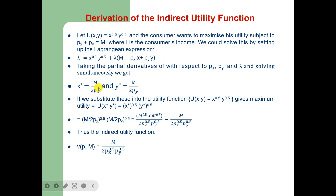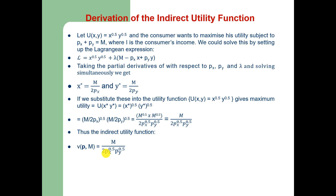Now, if we substitute these two Marshallian demand functions back into the utility function, it gives us the maximum utility. Solving this, the utility function becomes (M / 2PX)^0.5 * (M / 2PY)^0.5. Thus the indirect utility function is derived as V(PX, PY, M) = (M / 2PX)^0.5 * (M / 2PY)^0.5. This is how we derive the indirect utility function from the utility function subject to the budget constraint: derive the Marshallian demand functions, substitute them back into the utility function, and solve for utility.